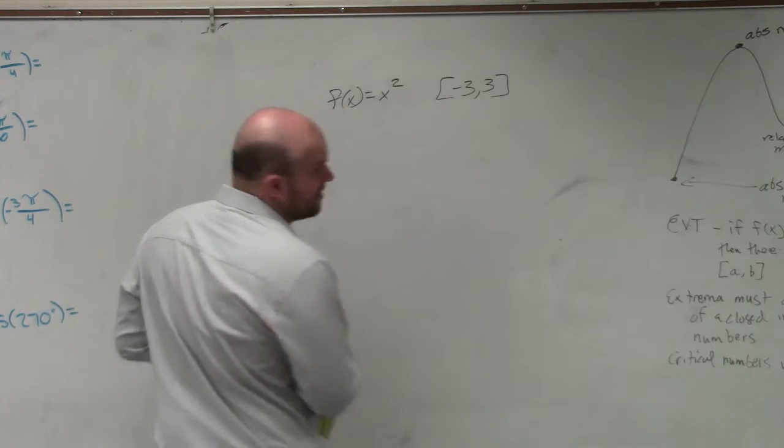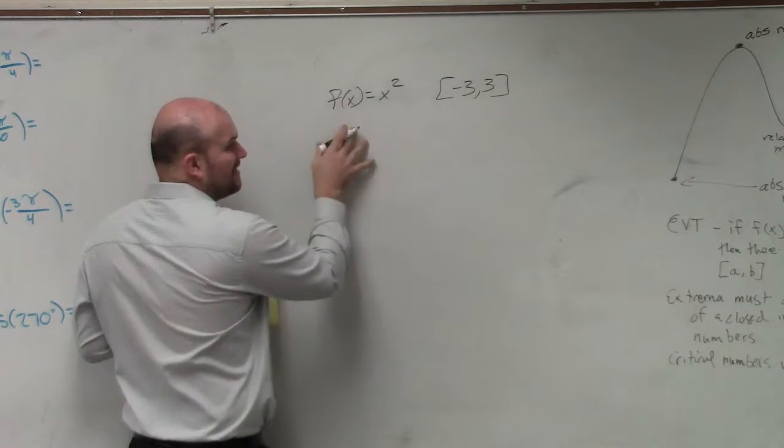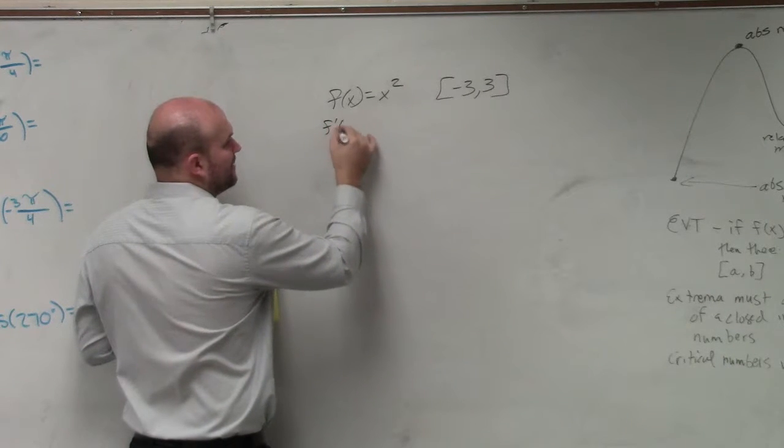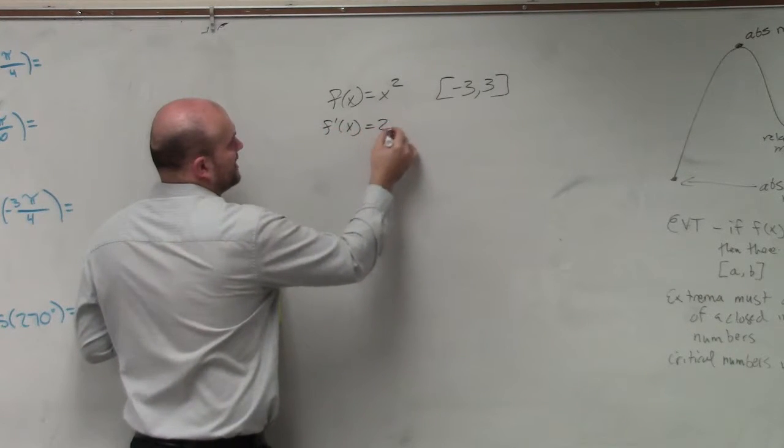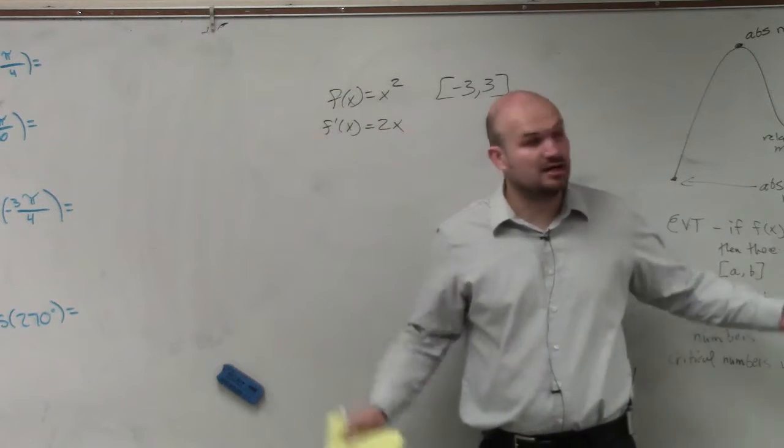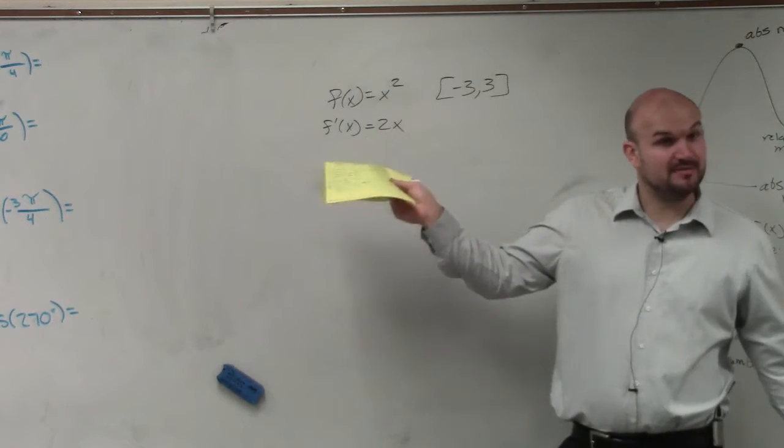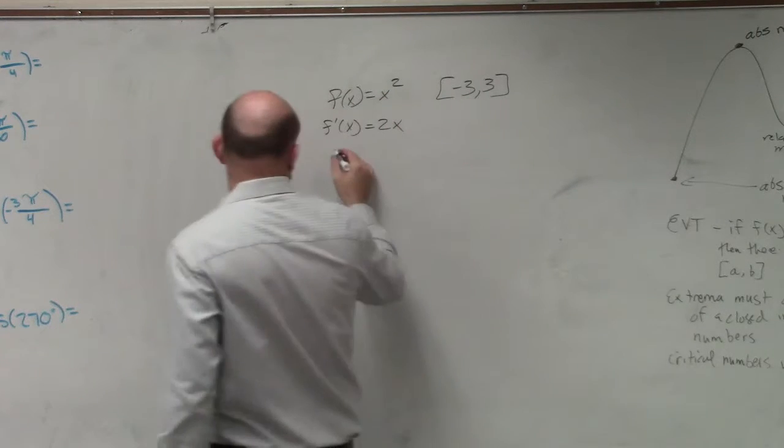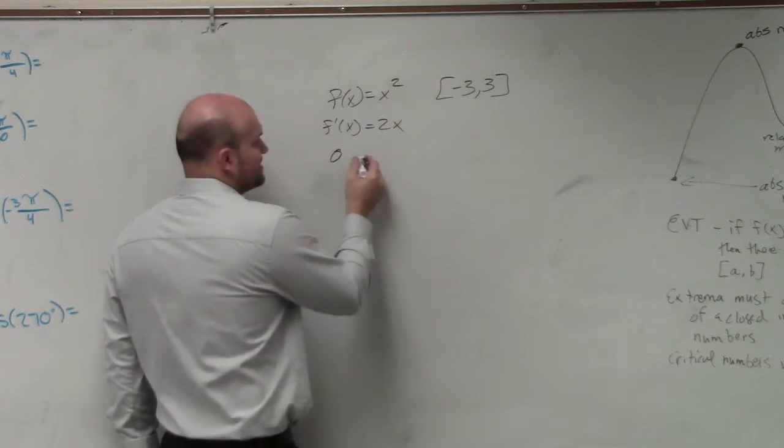So the first thing I would recommend doing is we want to find our critical number. So I'm going to take f prime of x. We know that equals 2x. But our critical number is going to be when our f prime is equal to 0. So what number makes that true? Replace f prime of x with 0.